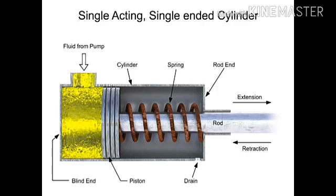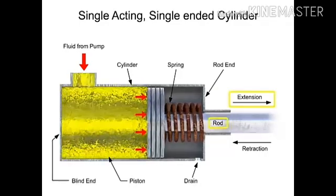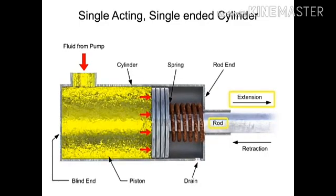When a control valve directs fluid through the inlet port into the blind end, pressure builds up and generates a force on the piston. When the pressure build-up is large enough, the piston begins to move, extending the rod. This is called the forward stroke.